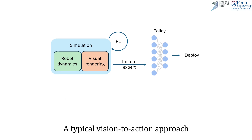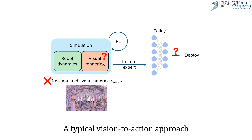A typical vision-to-action learned approach may use a simulator to execute an RL training scheme or imitate a privileged expert. But this does not work when we don't have a simulated event camera available to us.